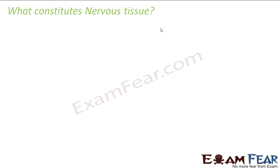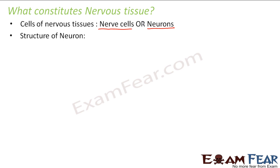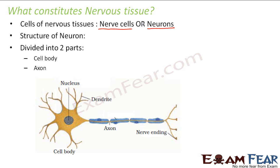Now let us see what constitutes the nervous tissue — what is it made up of? The cells of the nervous tissue are known as nerve cells or neurons. Just as bone cells are called osteocytes and cartilage cells are called chondrocytes, nerve cells are called neurons. How does a neuron look like? The neuron's cell body consists of a cell body with an axon — this part is known as the axon. This is how a neuron actually looks.